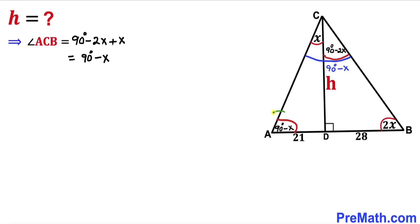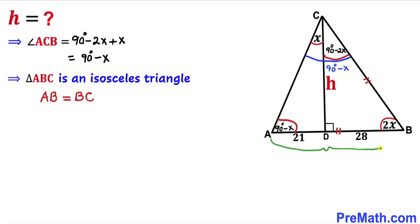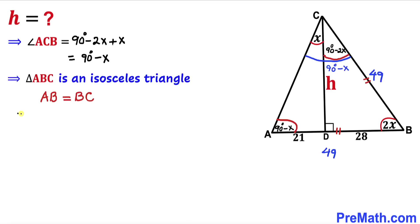Now let's make an observation. We can see that angle alpha in triangle ADC is 90 degrees minus x and this whole angle ACB is also 90 degrees minus x. So therefore triangle ABC is an isosceles triangle since these two angles are equal. Therefore side AB equals side BC. We know AB is 21 plus 28 equals 49 units, so BC is 49 units as well.